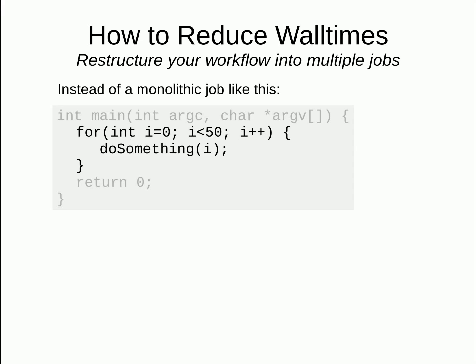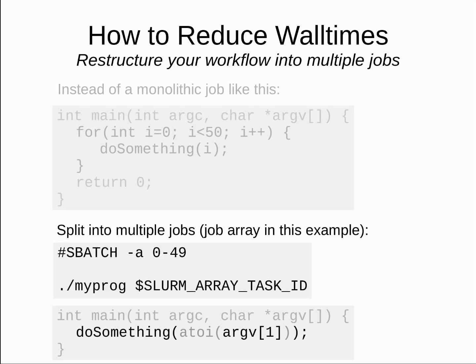One common option is to restructure a single job into multiple jobs. You may have a job with a for loop that iterates through a variable and calls something else to do the work, where each iteration is independent and does not depend on the other iterations. You could significantly cut your wall time by breaking this job up into 50 jobs. This example shows how to use job arrays to accomplish the same thing, though job arrays are not absolutely necessary. Note that the program now accepts a command line argument and uses that input instead of a variable from a for loop. There are many other ways to refactor your workflow into multiple jobs.